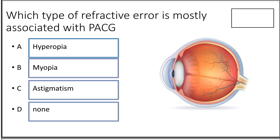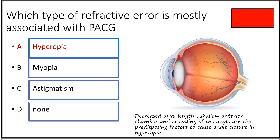Fifth question: which refractive error is mostly associated with angle closure? Option A hyperopia, option B myopia, option C astigmatism, option D none of the above. The answer is option A, hyperopia. Hyperopic eyes are structurally smaller compared to myopic eyes — they have a decreased axial length and a shallow anterior chamber, causing crowding of the angle. These are predisposing factors for risk of angle closure.